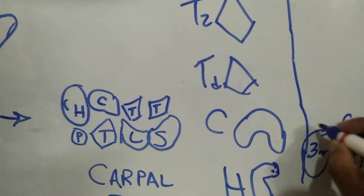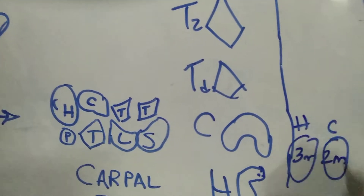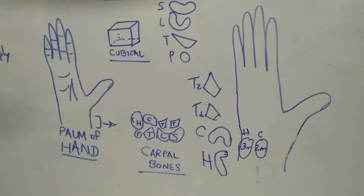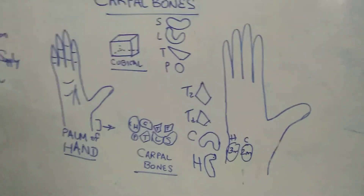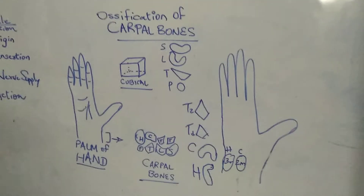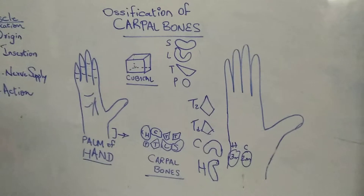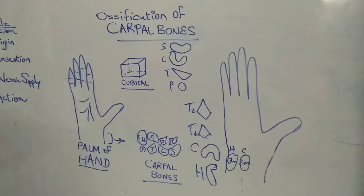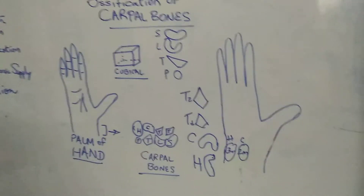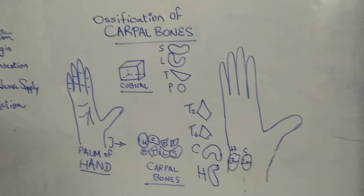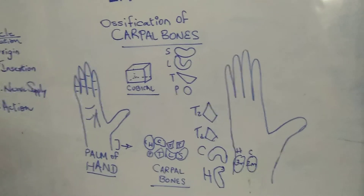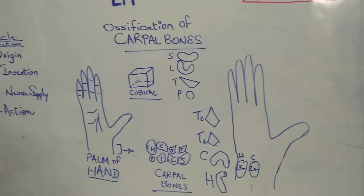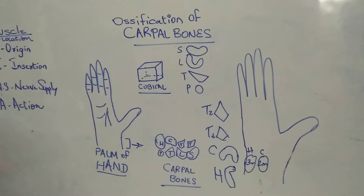So if you take a radiograph of a newborn, you will see two white color patches at the wrist area. These are depicting the two bones — capitate and hamate — which have already started ossification during intrauterine life.